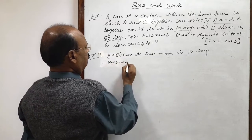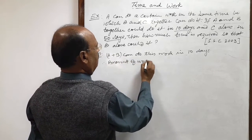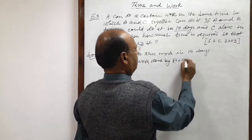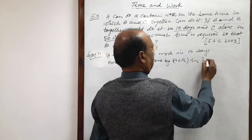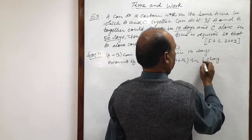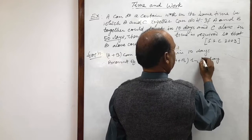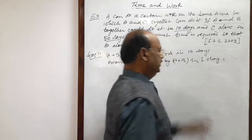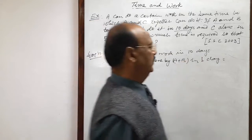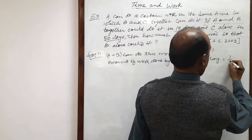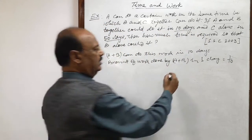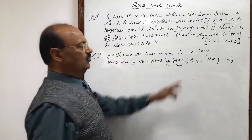Therefore, amount of work done by A plus B in 1 day: this is 1, and 1 day will be how much? Reciprocal of 10 days, this is amount of work 1 by 10. So this is the amount of work done by A plus B in 1 day.